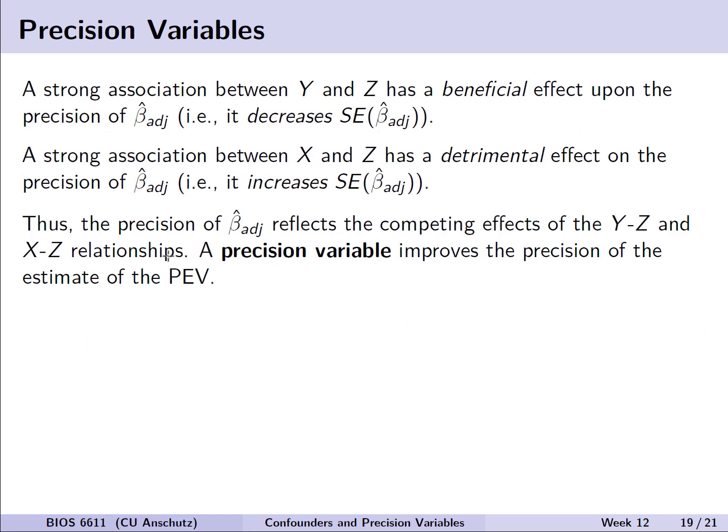Why we're interested in precision variables: if a strong association exists between y and independent variable z, there is a beneficial effect on the precision of beta hat adjusted for x — it decreases the standard error. However, if there's a strong association between x and z, there is a detrimental effect on precision — it increases the standard error of beta hat adjusted. Thus, the precision of beta hat adjusted reflects the competing effects of both the y-z association and the x-z association.